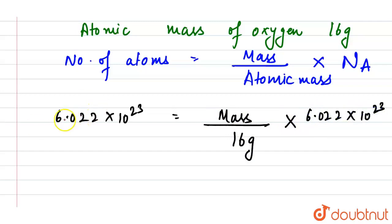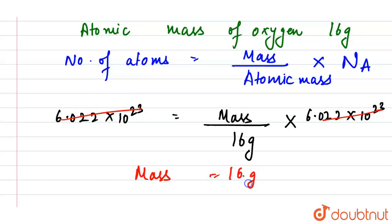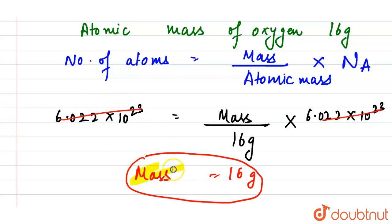The 6.022 × 10²³ values cancel out, so the mass is equal to 16 grams. We have found the mass of oxygen corresponding to the removed atoms is 16 grams.